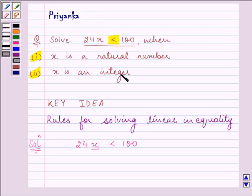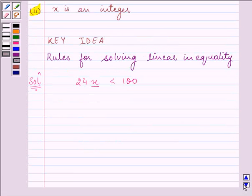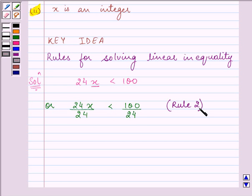Now, 24x less than 100 on dividing by the same positive 24 number we get. Now, here we have divided 24 to both sides and hence we have used rule 2 that we discussed in our key idea.